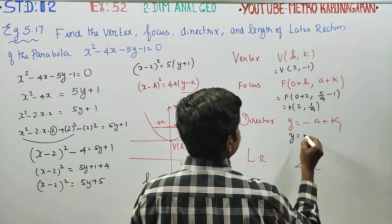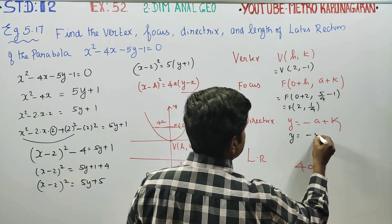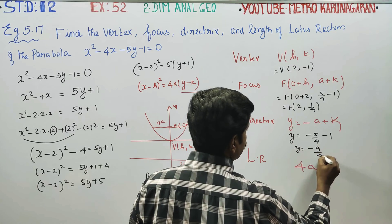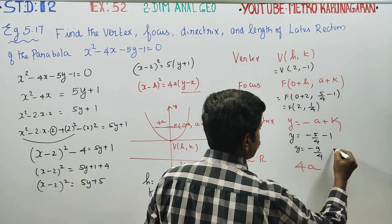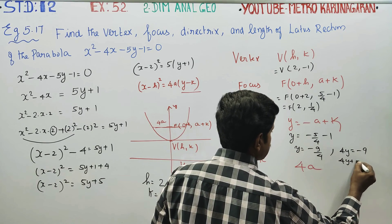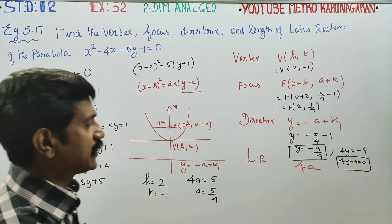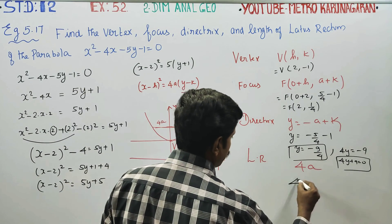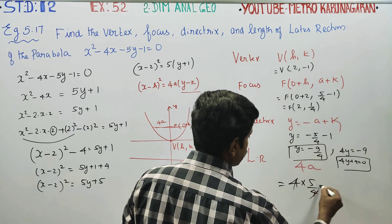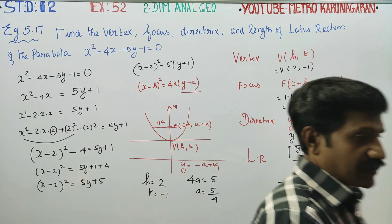The directrix is y = -a + k = -5/4 + (-1) = -5/4 - 4/4 = -9/4. So the directrix equation is 4y + 9 = 0. The length of the latus rectum is 4a = 4 × (5/4) = 5 units. So the length of the latus rectum is 5 units.